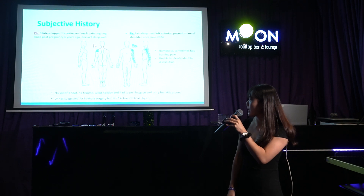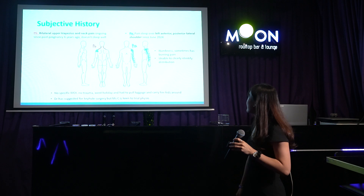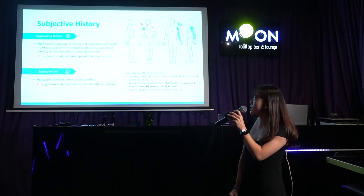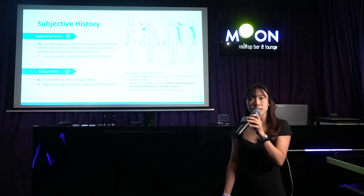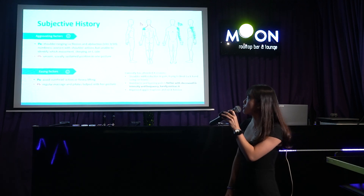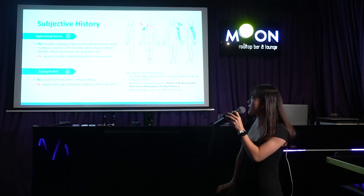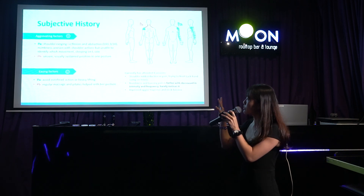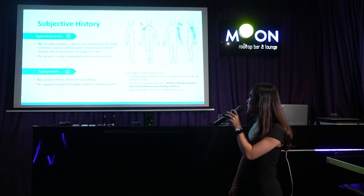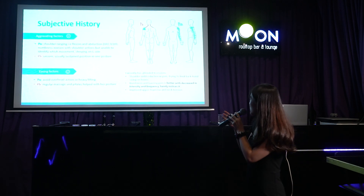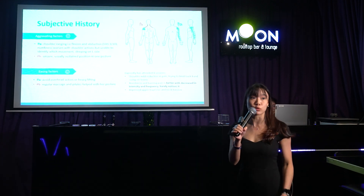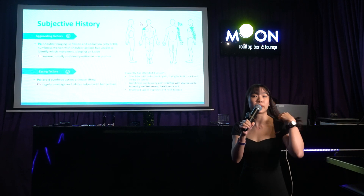The doctor suggested keyhole surgery, but she was very keen to trial conservative management. Aggravating factors include shoulder movements, though she could not identify the exact movement, and sleeping on her left side worsens the shoulder pain and burning sensation. Upper trapezius tension worsens with sustained postures. Easing factors include avoiding overhead activity and heavy lifting; she also gets regular massages and finds Pilates helpful. After four sessions, there is a mild reduction in shoulder pain, and the numbness and burning pain have decreased in both intensity and frequency. Her upper trapezius tension and neck pain have also improved.